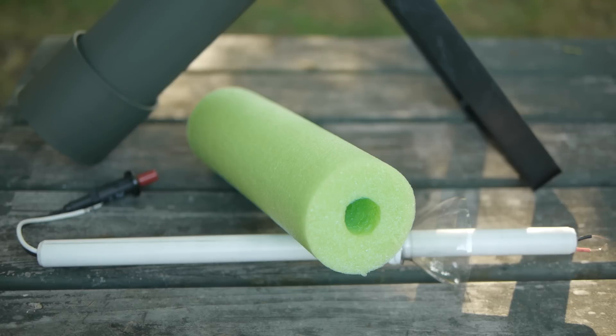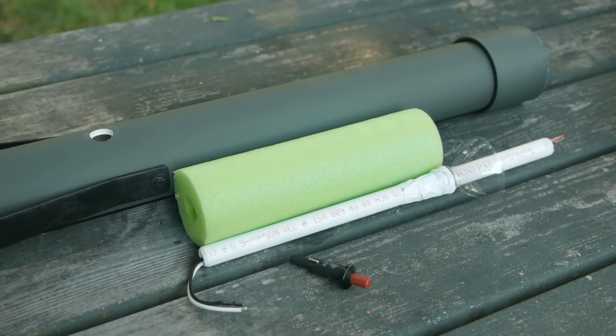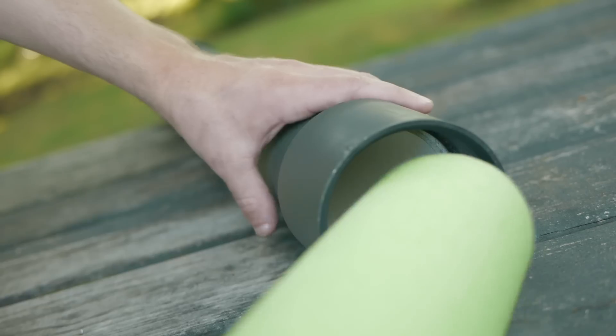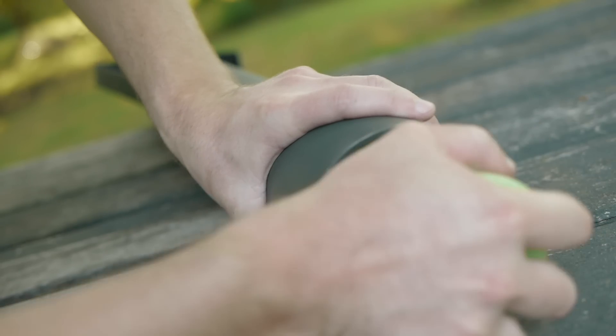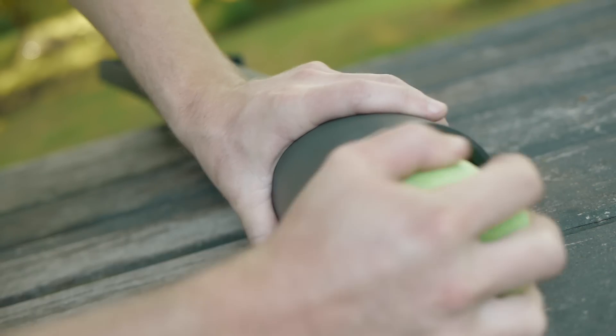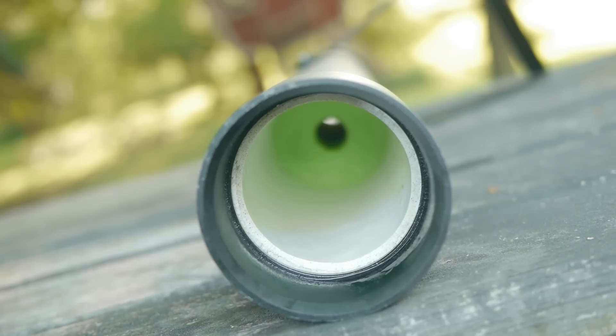To keep the core centered, I'll be using a short section of a giant foam pool noodle, which is pressed into the 3 inch pipe. This was more difficult than I expected, and it did take some grease for me to finally press it into place.